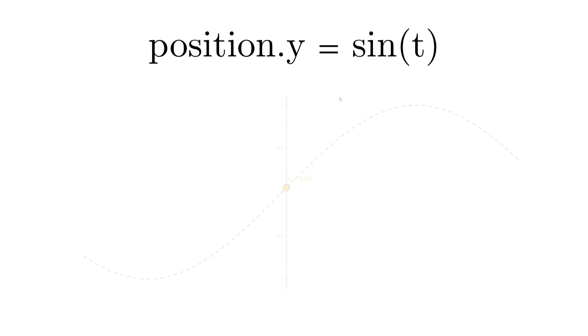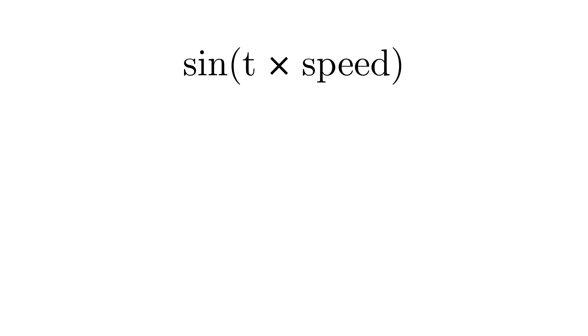That means that the coin starts with a y position of 0, and then smoothly moves up and down as time goes by. If we want to increase the speed of our animation, we would multiply our time variable with some number. Multiplying by 2 will make the animation go twice as fast, just as multiplying with 0.5 will make the animation go twice as slow.